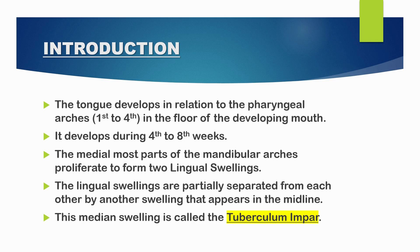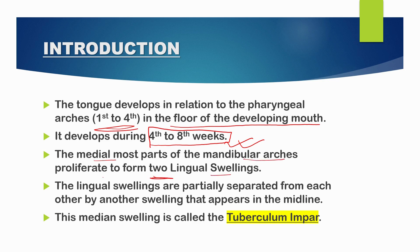The tongue develops in relation to the pharyngeal arches — the first to fourth pharyngeal arch — in the floor of the developing mouth. It develops during the fourth to eighth weeks of development. The medial-most part of the mandibular arches proliferates to form two lingual swellings. These lingual swellings are partially separated from each other by another swelling that appears in the midline, known as the tubercular impar.